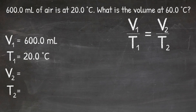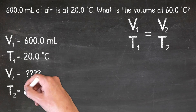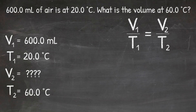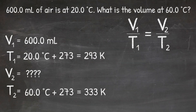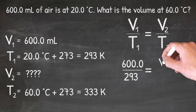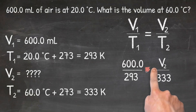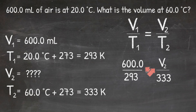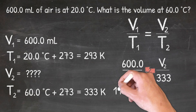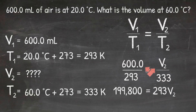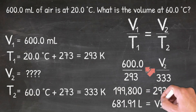The question is asking what is the volume, so I'm going to solve for V2. And it's asking what is the volume of that gas at 60 degrees Celsius, so I'll plug in 60 degrees Celsius for T2. Now before we move on, it's important that we first convert the temperature to Kelvin. I'm just going to add 273 to both T1 and T2. That gives me a T1 of 293 and a T2 of 333. Now I can plug in 600 for V1, 293 for T1, and 333 for T2. I'll cross-multiply and do 600 times 333, and 293 times V2. That gives me 199,800 equals 293 V2. I then divide both sides by 293, and that gives me a V2 of 681.91 milliliters.